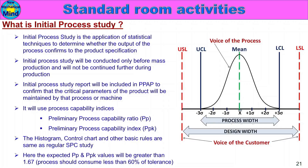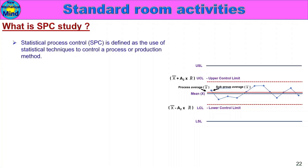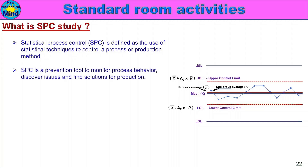SPC study is defined as the use of statistical techniques to control a process or production method. SPC stands for Statistical Process Control. SPC is a prevention tool to monitor process behavior, discover issues, and find solutions for production.